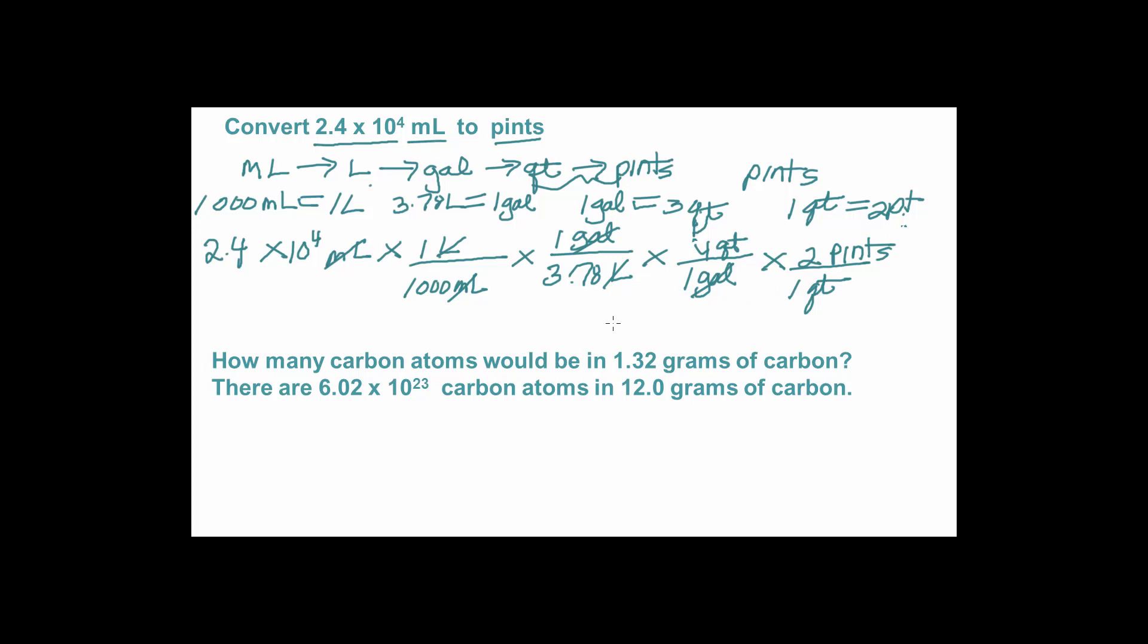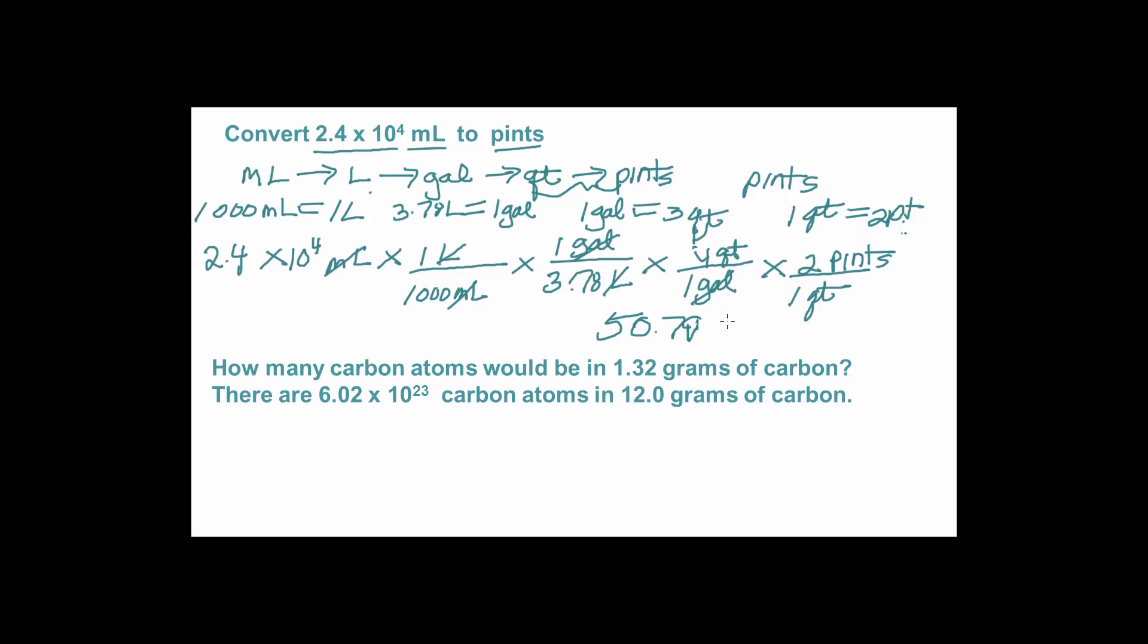So let's skip my calculator. And I'll calculate this. So I have 2.4 times 10 to the 4th divided by 1,000 divided by 3.78 times 4 times 2. And I end up with 50.79. Let me try to erase that. 50.79 pints. But I've only got two significant figures here. So I'm going to round that to 51 pints.